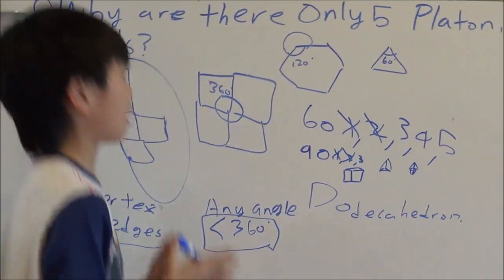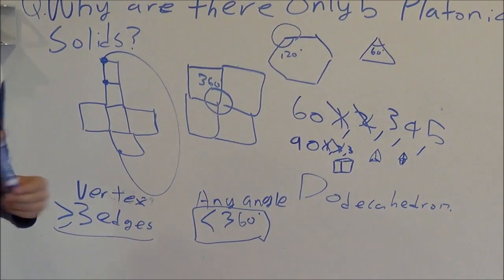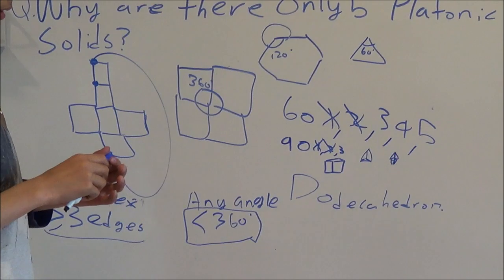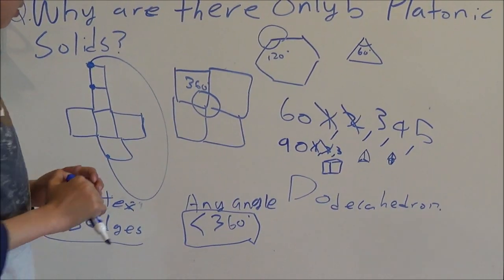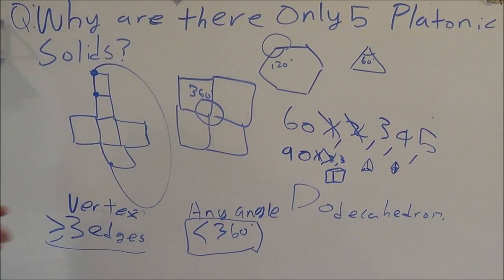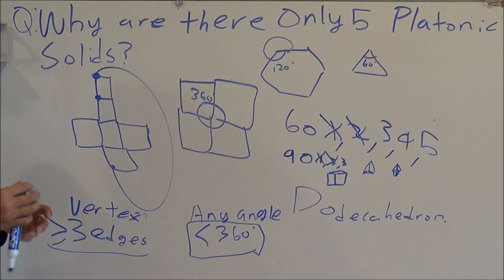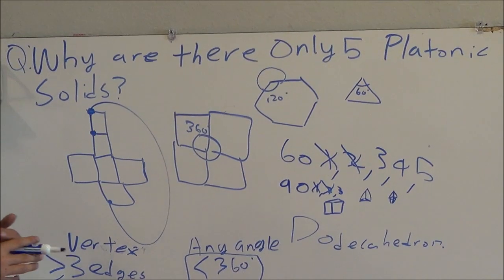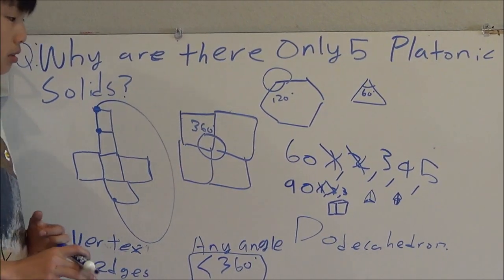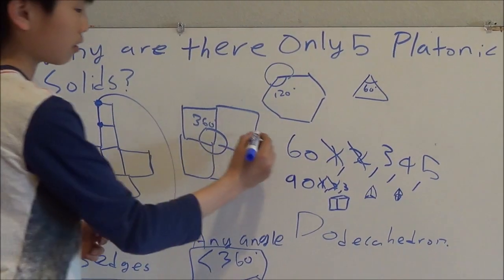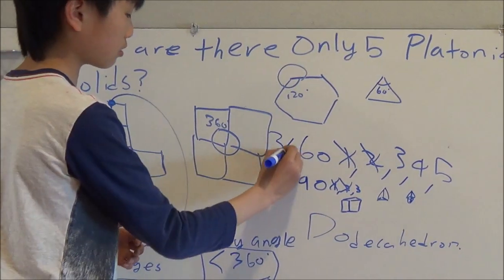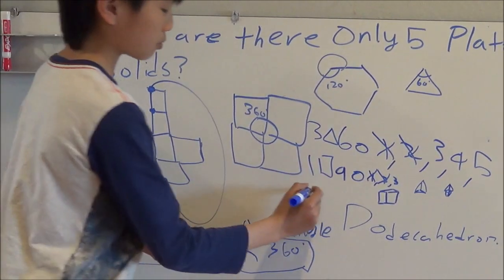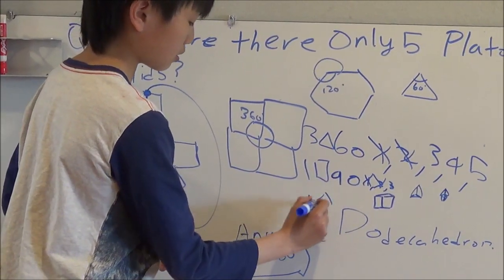So, these are the five platonic solids. No other shapes will work. We've already ran through all of the different shapes and the amount of edges connecting to each vertex there can be. So, this is the answer to why there are only five platonic solids. And, more specifically, there are three platonic solids that use triangles. There's one platonic solid that uses squares. And, there's one platonic solid that uses pentagons.